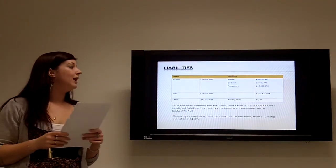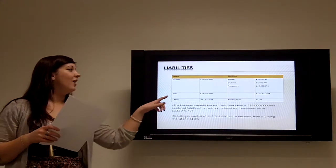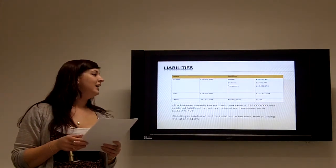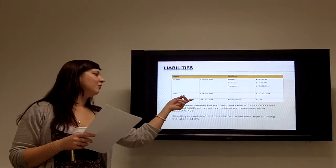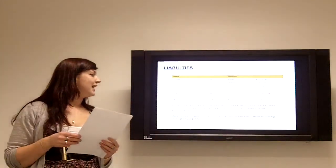So you can see that the total liabilities of the scheme is around £122 million and the assets currently held by the scheme are £75 million. So that means that we have a deficit of around £47 million and the funding level at the moment is only at 61.3%.